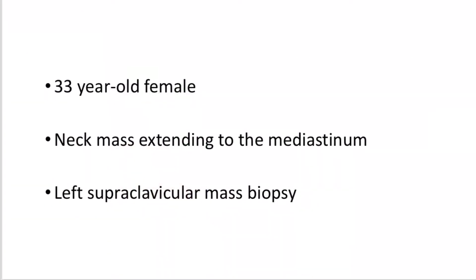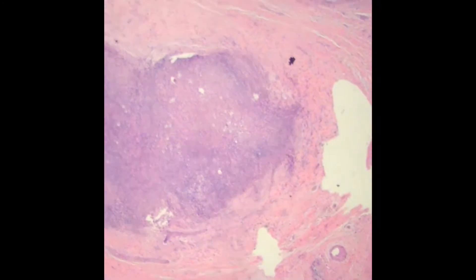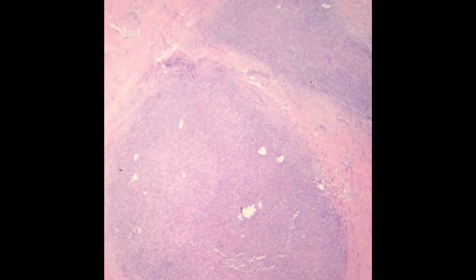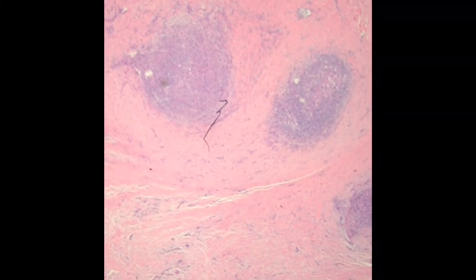Today I want to show two cases of Hodgkin lymphoma, starting with a case of classical Hodgkin lymphoma. This came from a 33-year-old woman who presented with a neck mass that extended down and included some mediastinal lymphadenopathy. On really low power, what you can see is that the architecture of this lymph node has been completely effaced, with little nodules interspersed between really thick bands of collagen fibrosis — a nodular effacement with extensive sclerosis.